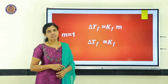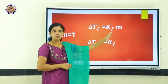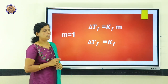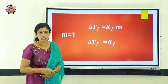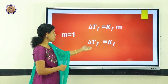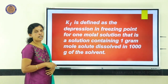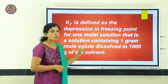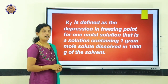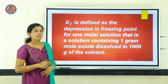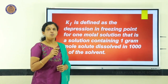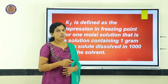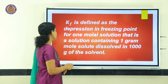How can we define the cryoscopic constant Kf? From ΔTf = Kf × m, when m = 1, ΔTf = Kf. So the molal cryoscopic constant is defined as the depression in freezing point for a one molal solution — that is, the depression in freezing point when one mole of solute is dissolved in 1000 grams of solvent.